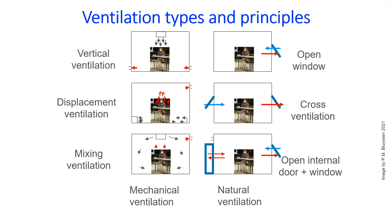Last but not least, ventilation is used as a control strategy for indoor air quality. Ventilation can be established by simply opening a window — natural ventilation — or by using a mechanical ventilation system, ranging from exhaust-only to very advanced air conditioning systems that both supply and exhaust air. Mechanical ventilation gives the possibility to control the amount of air supplied and exhausted, while natural ventilation, such as opening a window, is an uncontrolled and therefore less reliable method.